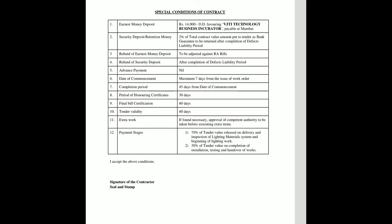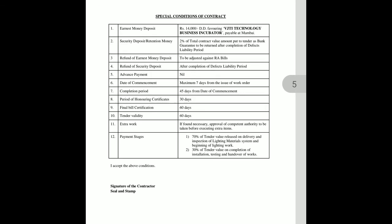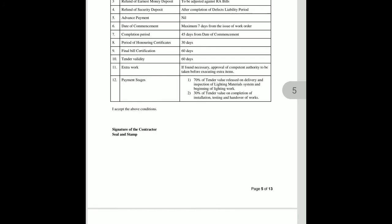Refund of the security deposit occurs after completion of the defect liability period. Advance payment is nil. Date of commencement is 7 days maximum from the issue of the work order. Completion period is 45 days from the date of commencement. Period of the honoring certificate is 30 days and the final bill certificate is 60 days. Tender validity is 60 days. For extra works, approval of the competent authority must be taken before execution. Payment structure: 70% of the tender value is released on delivery and inspection of the lighting material system and beginning of lighting work; the remaining 30% is released on completion of installation, testing, and handover of the work.